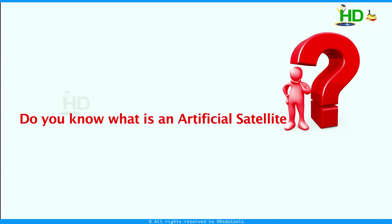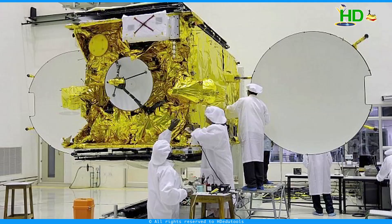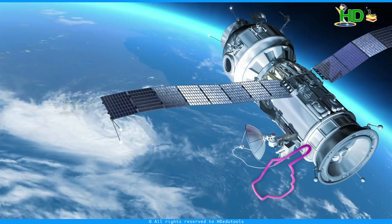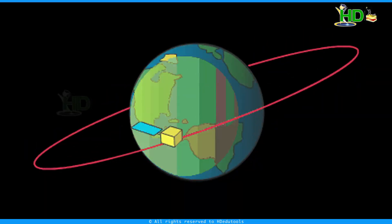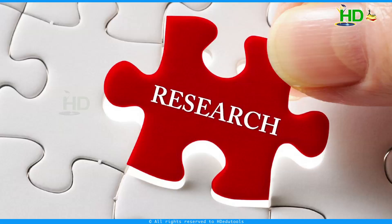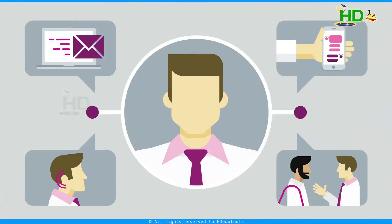Do you know what is an artificial satellite? An artificial satellite is a man-made satellite. It is an electronic device which circulates around earth, which is used for research as well as communication purposes.